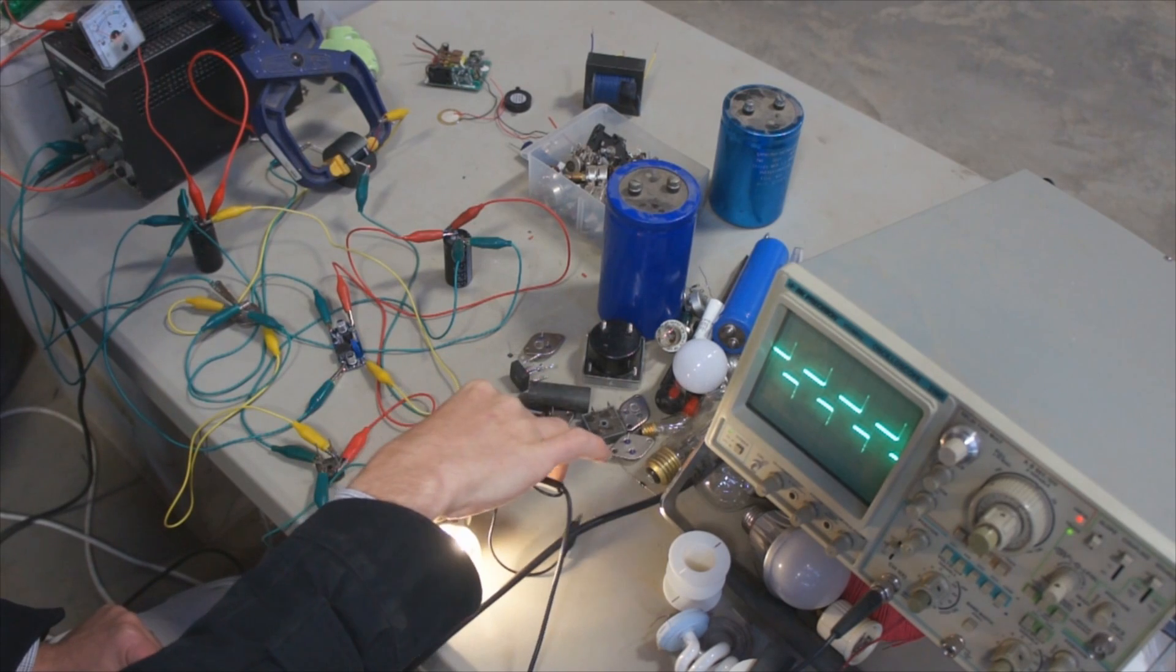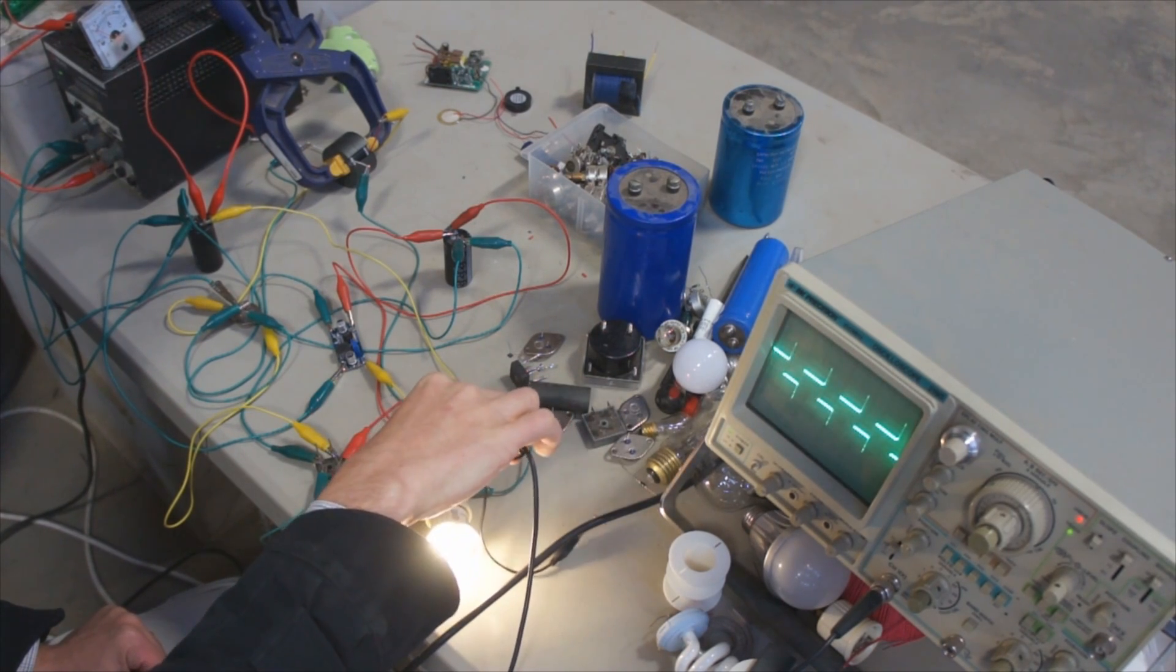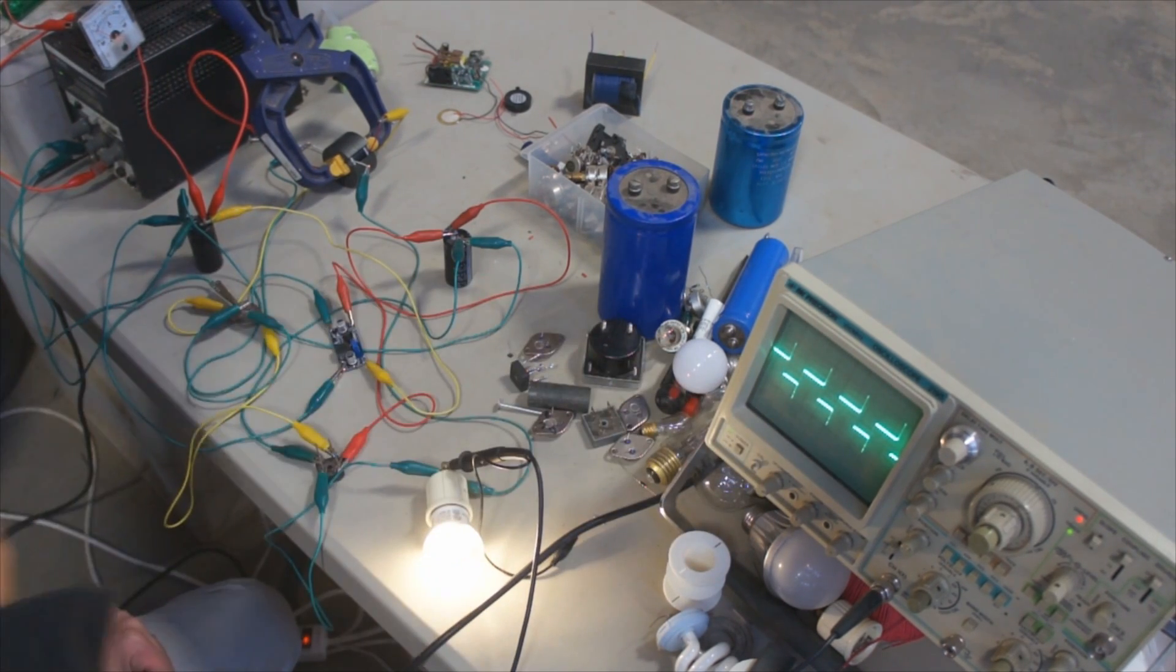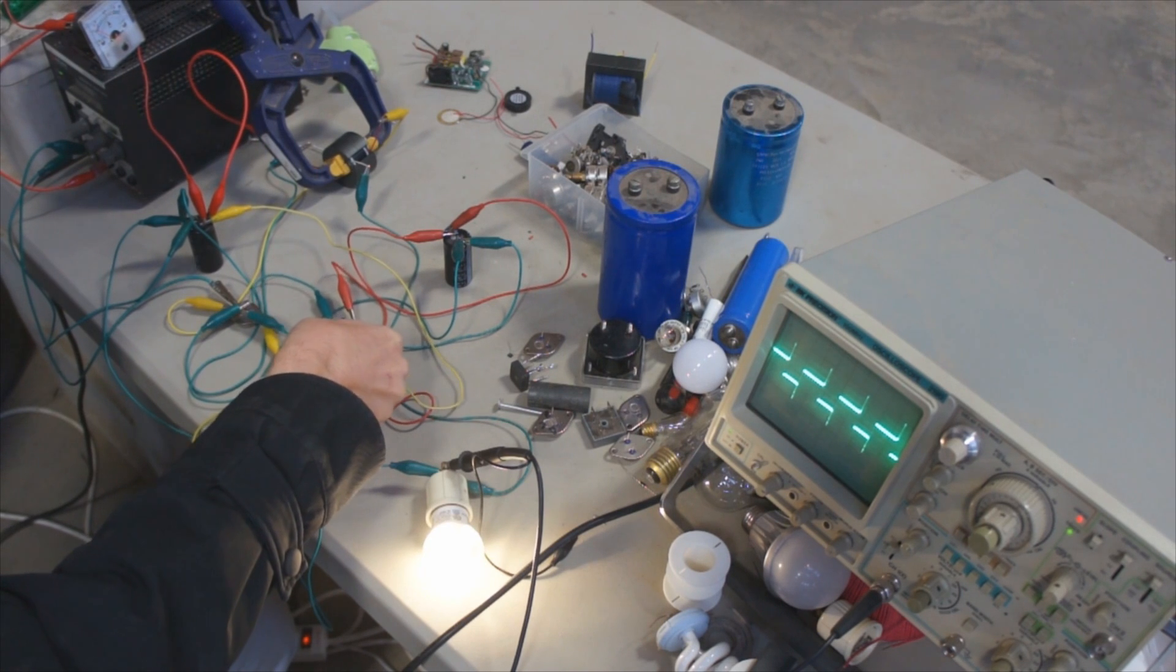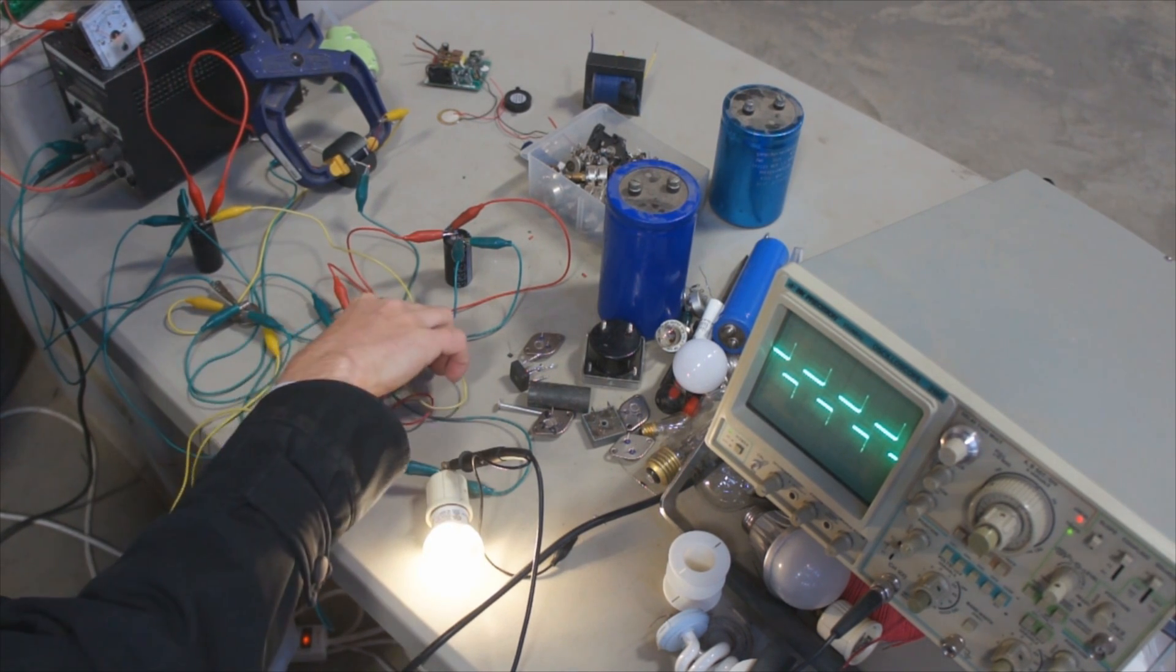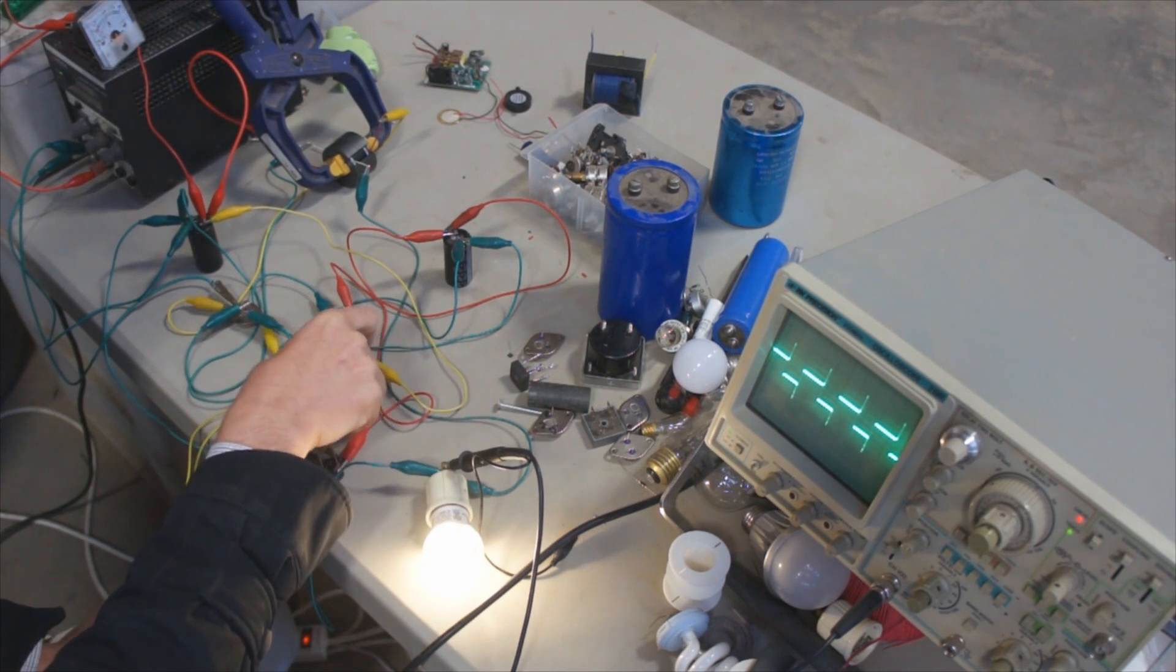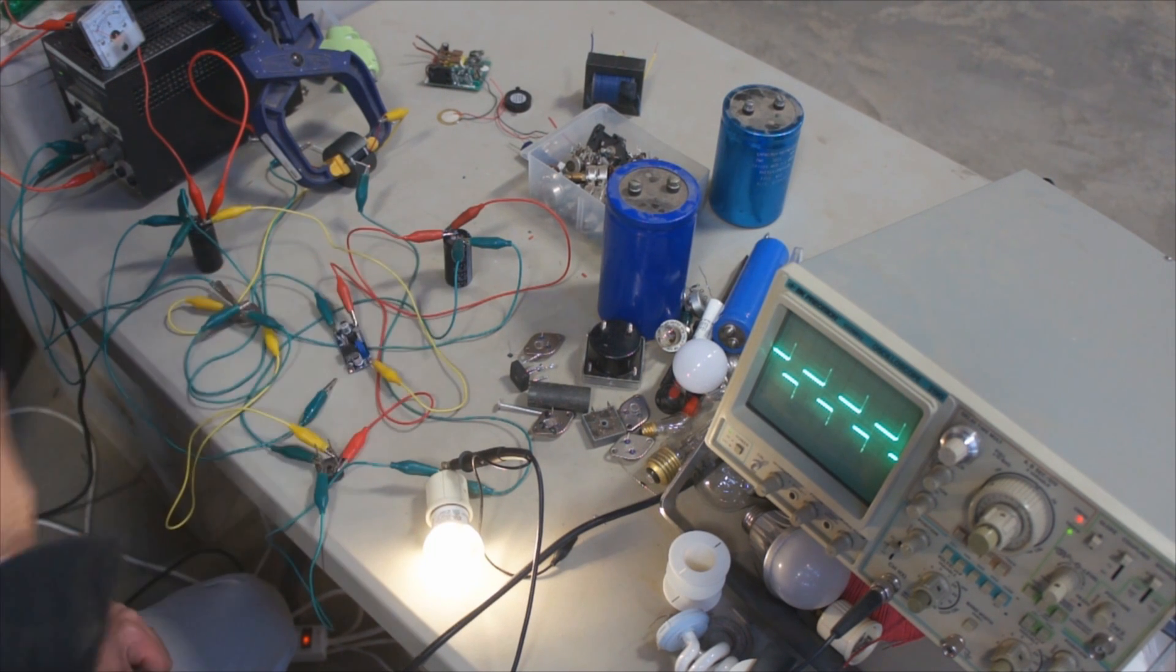All right, so what I want to show here is I've got the scope connected. It's just on the load here so we can see the waveform, and that's useful in tuning this. So I'm going to disconnect the looping circuitry. So right now this thing's running, but I've broken the output of the looping circuitry.